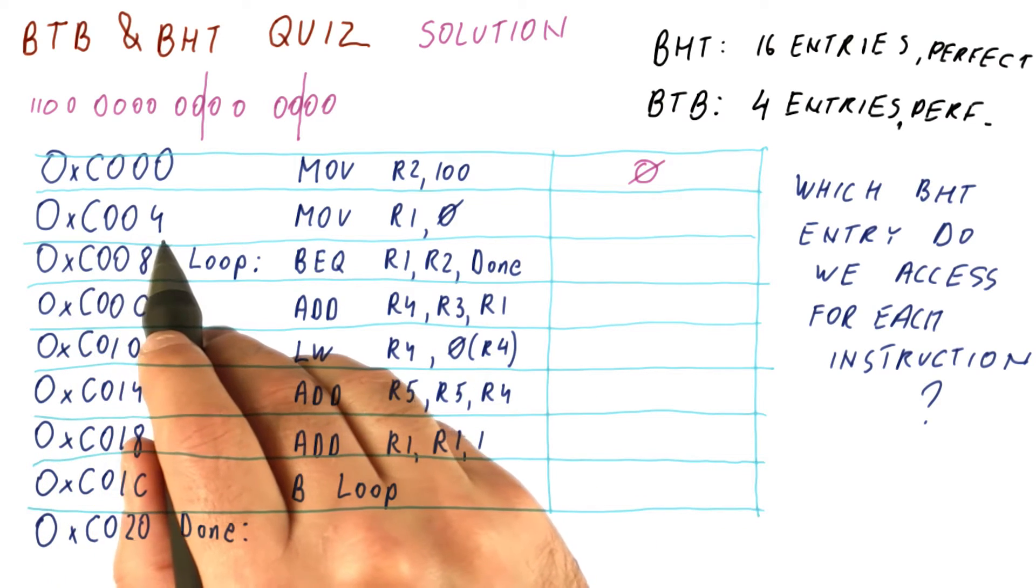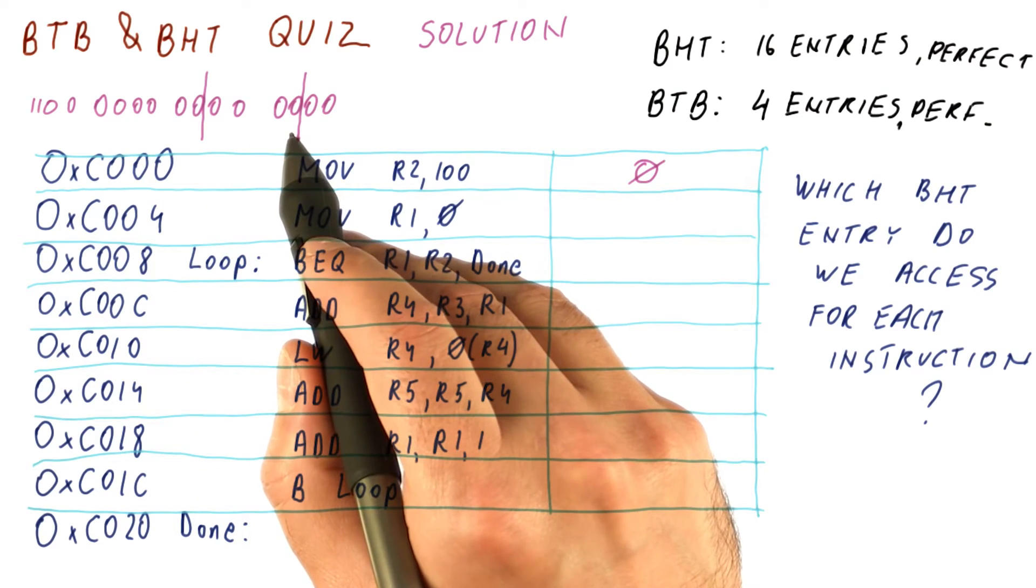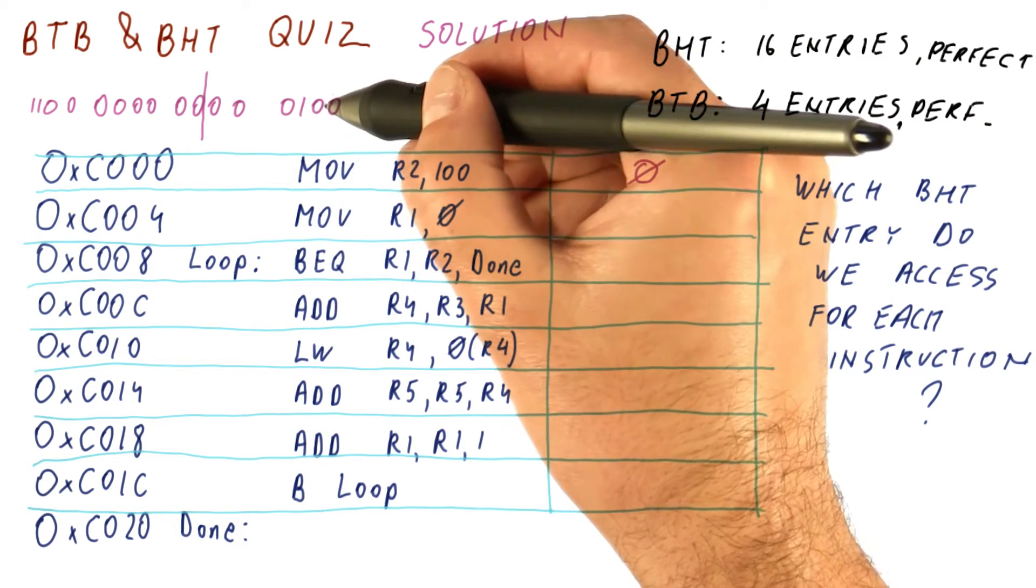The address is C, zero, zero, four. C, zero, zero are not changing. What is changing is four. Four in binary: zero, one, zero, zero.